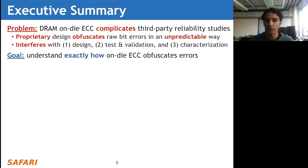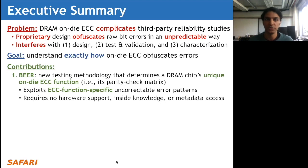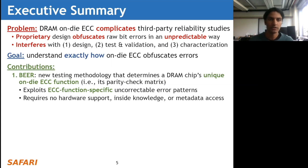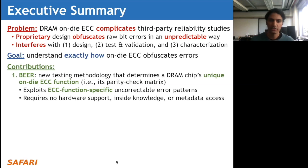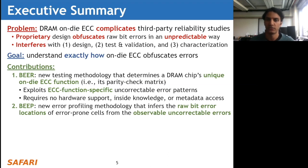To overcome this problem, our goal is to understand exactly how on-die ECC obfuscates these errors. To this end, we make two contributions. The first is BEER - a new testing methodology that determines a DRAM chip's unique on-die ECC function, in other words its parity check matrix H. This represents the mathematics going on within the ECC encoder and decoder. BEER does this by exploiting ECC function-specific behavior revealed in uncorrectable error patterns, requiring no hardware support, inside knowledge, or metadata access - making BEER applicable to commodity DRAM chips on the market.